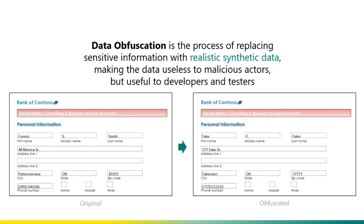Redaction is the first step in the process of data obfuscation. Data Obfuscation is the process of replacing sensitive information with realistic synthetic data. Developers and testers need realistic data to build and test software, but they don't necessarily need to see the real data — they can see an obfuscated version. We're trying to replace sensitive information with realistic, indistinguishable synthetic data, making it useless to malicious actors but still useful for developers and testers. Data obfuscation techniques are well established for structured data like tables; however, for unstructured data such as images or PDFs, it is still a challenge we are aiming to solve.